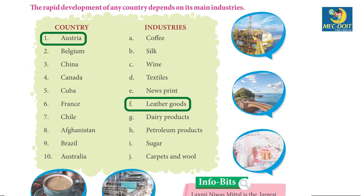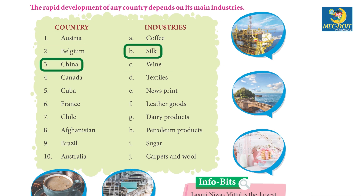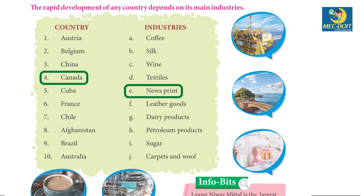1. Austria — Leather Goods. 2. Belgium — Textiles. 3. China — Silk. 4. Canada — Newsprint.